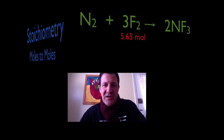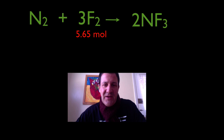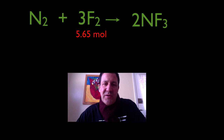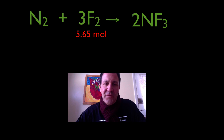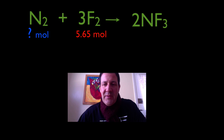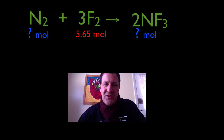Let's look at the chemical equation. It's nitrogen gas plus fluorine gas equals NF3. We have been given 5.65 moles of F2, and we want to know how many moles of N2 and how many moles of NF3 we're going to produce in this reaction.